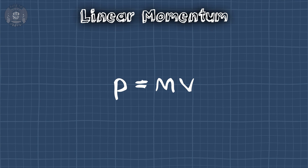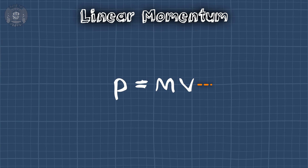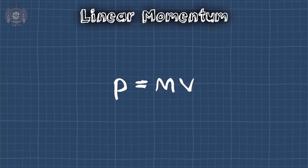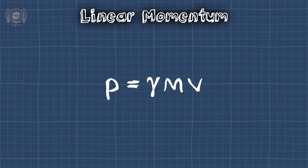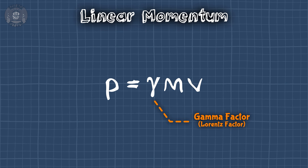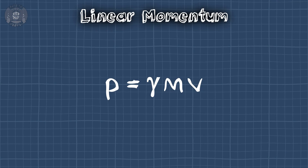Misconception number two: momentum does not require mass. This equation p=mv is not a fundamental definition. It's a special case for slow-moving objects with rest mass — it's pretty good for speeds less than about 10% the speed of light. Any faster than that and you'll need the version from special relativity. This gamma factor adjusts it so it's more accurate. Even then, it still only works for objects with rest mass. Surprise! Light doesn't have any of that, so even this equation fails for light.